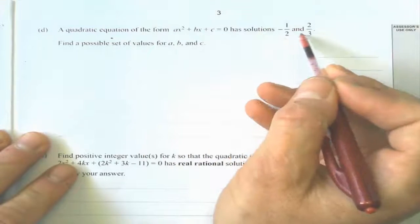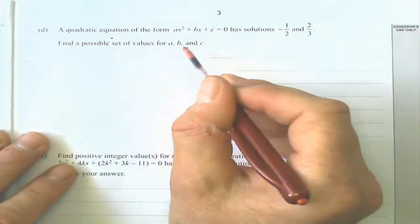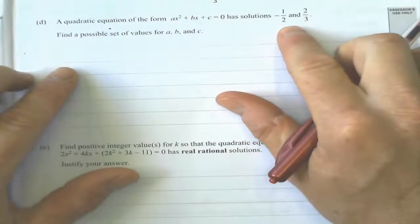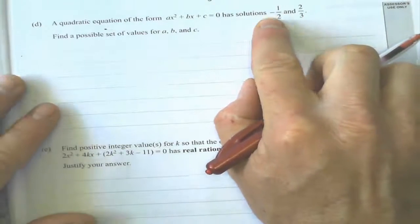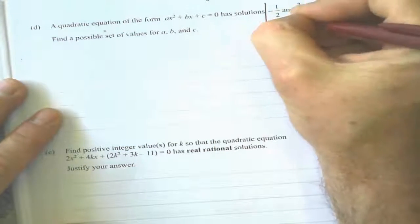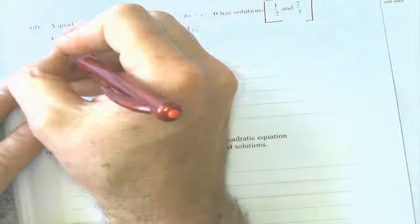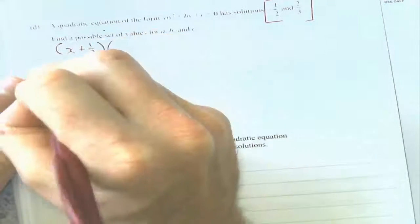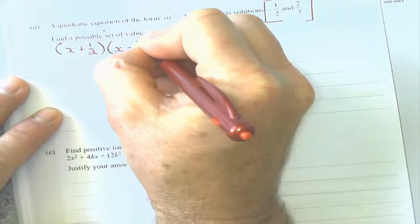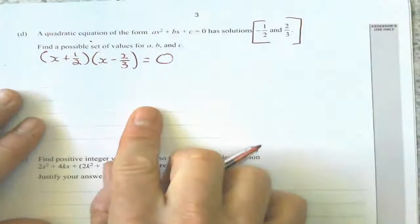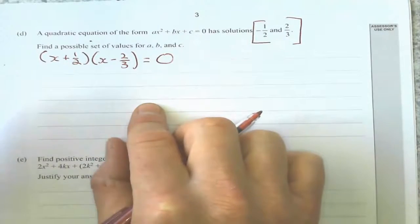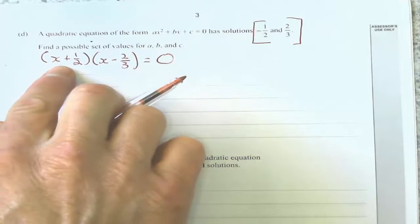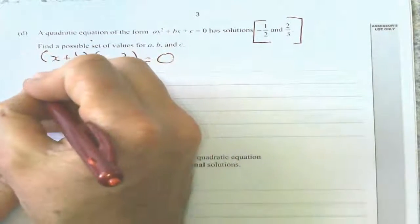Let's take a look at the second to last one. A quadratic equation is in this form and has these solutions — find a possible set of values for A, B, and C. If it has these solutions, if these are the roots of the equation, that means x plus a half times x minus 2 thirds equals zero. Fractions don't help us too much, so I know from factorizing that I can set each of these factors equal to zero and solve for x: x plus one half equals zero, and x minus 2 thirds equals zero.